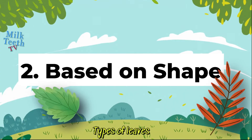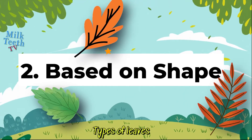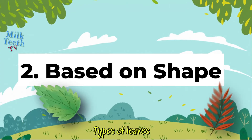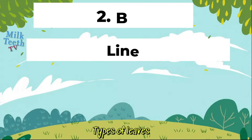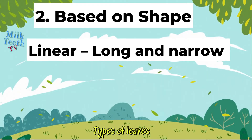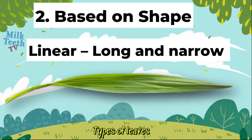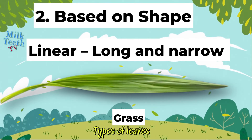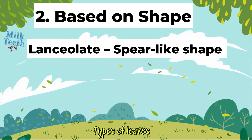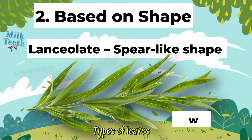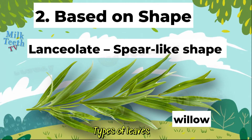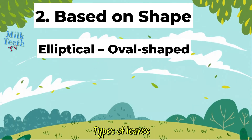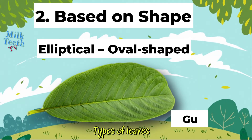Number 2: Types of leaves based on shape. Leaves can have a variety of shapes. Based on shape, leaves can be linear — that is long and narrow, for example grass. Leaves may also have a spear-like shape; such leaves are called lanceolate, for example a willow leaf. Leaves can also be elliptical or oval shaped, for example a guava leaf.